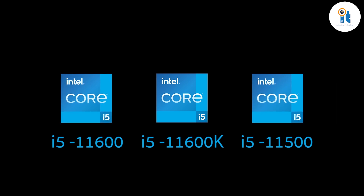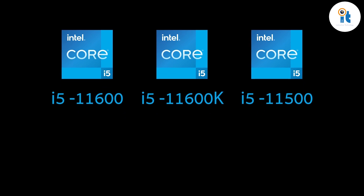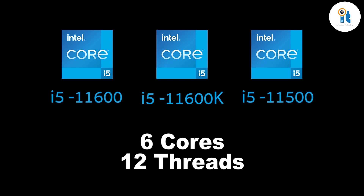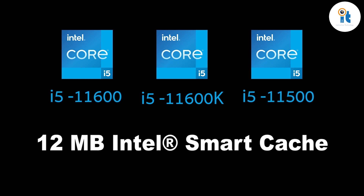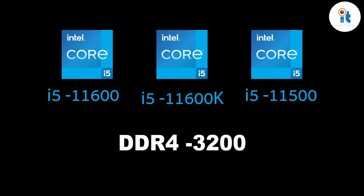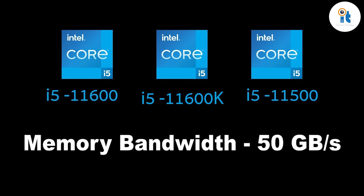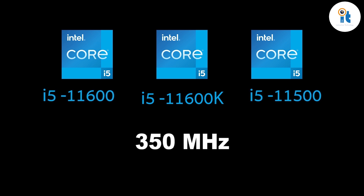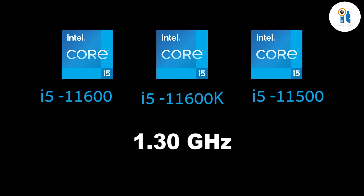Some specifications are the same across these processors: lithography 14 nanometer, 6 cores, 12 threads, 12 MB Intel Smart Cache, max memory size 128 GB, memory type DDR4 3200 MHz, memory bandwidth 50 GB per second. Graphics: Intel UHD Graphics 750, graphics base frequency 350 MHz, graphics max dynamic frequency 1.30 GHz, 4K supported at 60 Hz.